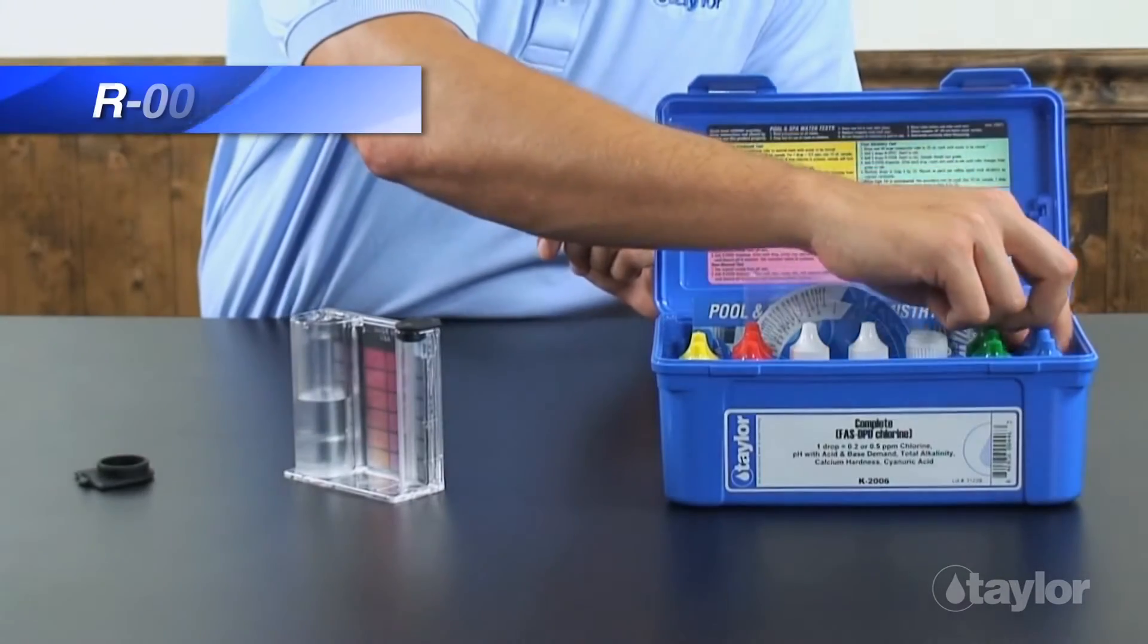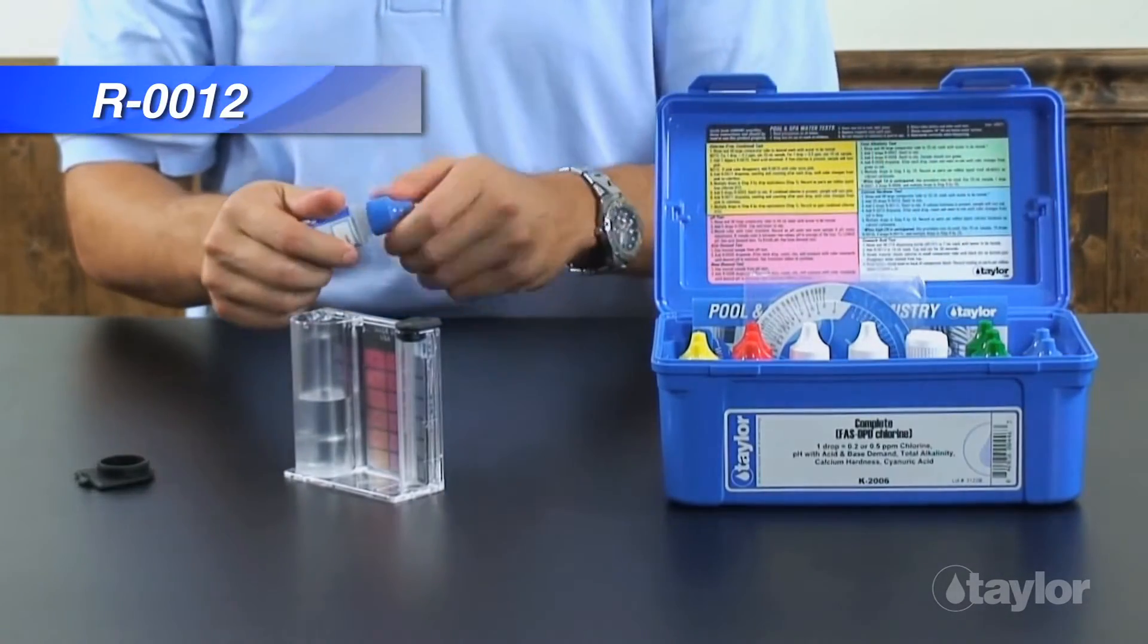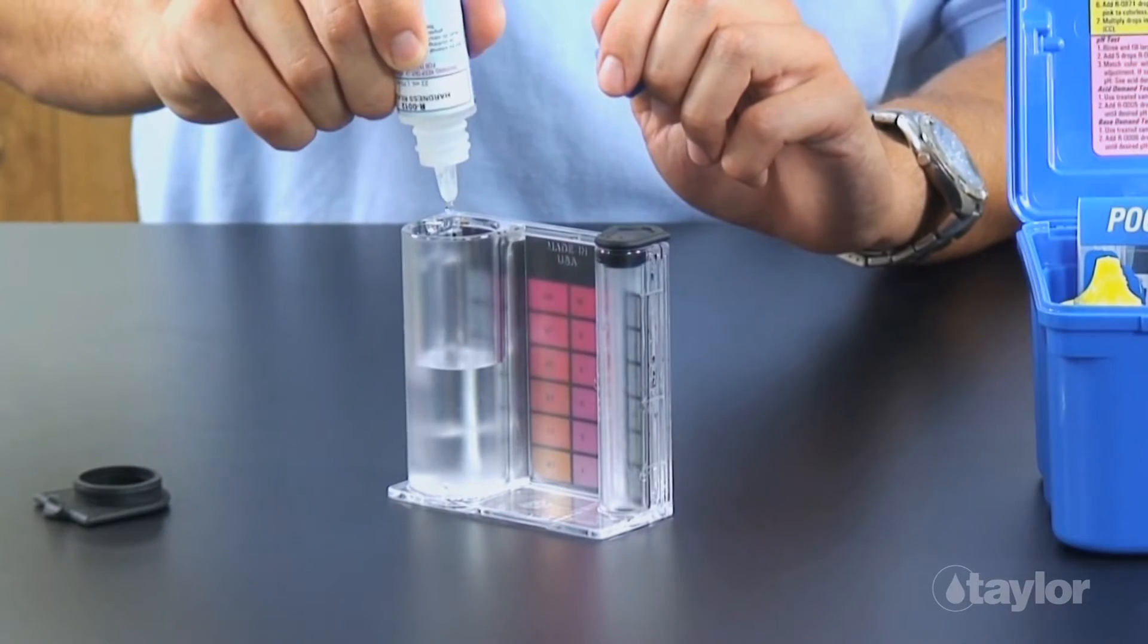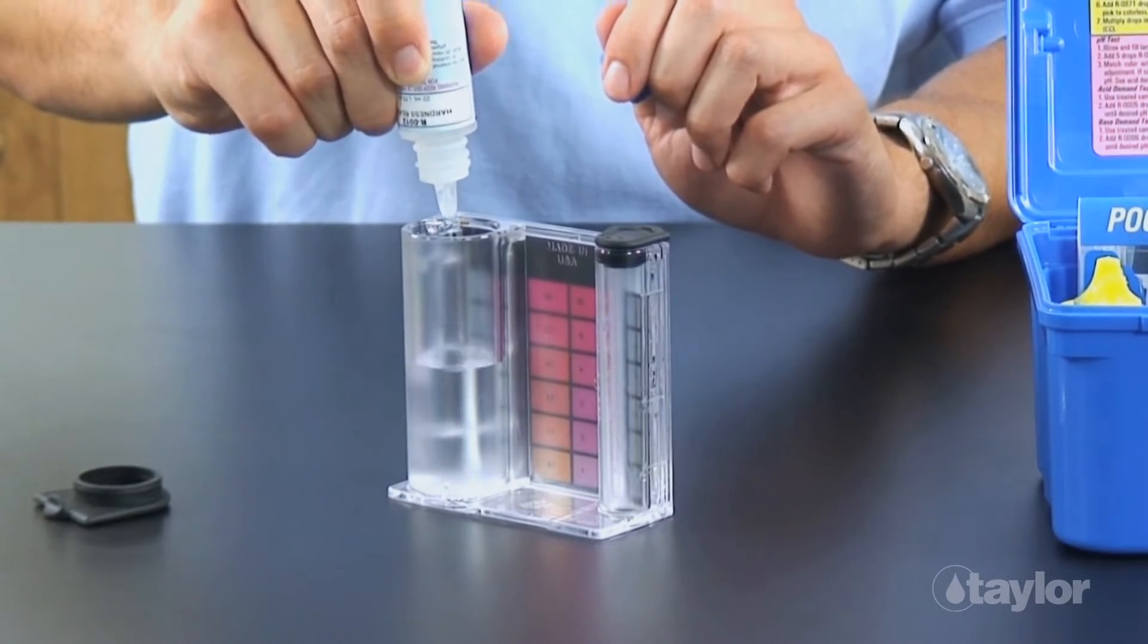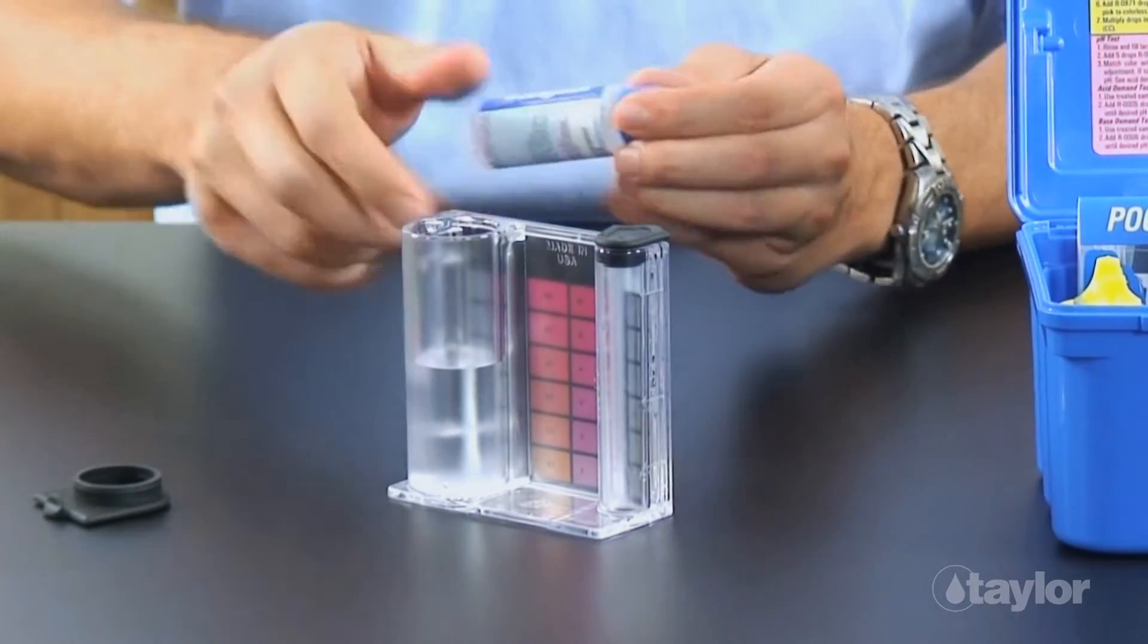Add 5 or 6 drops of reagent 12 to the sample before adding the buffer and indicator. Record the number of drops used. Swirl to mix.